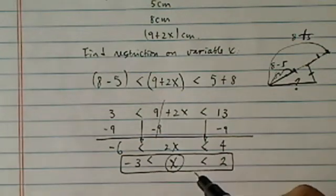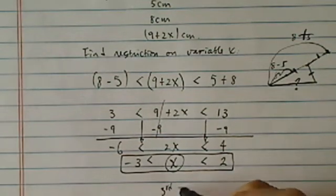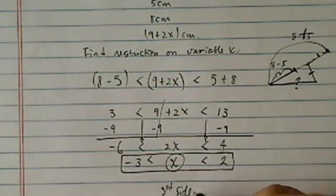Because the third side, the side where you investigate, it's not x. It's 9 plus 2x.